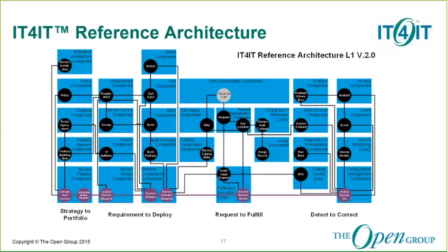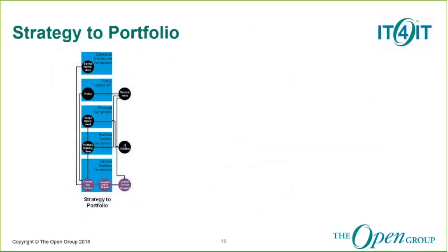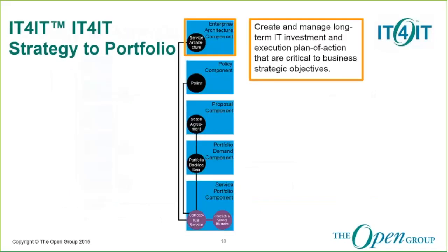Here's that reference architecture view again. Strategy to portfolio is really the first column — it's the smallest value stream in terms of how many functional components and data artifacts it manages. Looking closer, the enterprise architecture component is where we really create the service architecture and relate it to the other dimensions of the enterprise: the business architecture, the technology and information architecture, and those roadmaps and plans. The service architecture is the essential data object — it includes blueprints for the service, enterprise guiding principles that apply, and technology roadmaps that would impact this service.